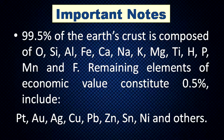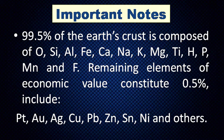The question arises: how do these less-than-1-percent elements increase their concentration? There are natural processes held responsible for this increase in concentration. In fact, 99.5 percent of the earth's crust is composed of oxygen, silicon, aluminum, iron, calcium, sodium, potassium, magnesium, titanium, hydrogen, phosphorus, manganese, and fluorine.